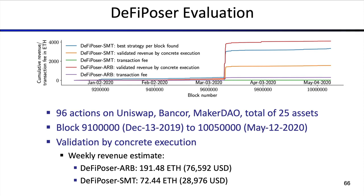When we evaluate DeFiPoser, we can objectively compare the Bellman-Ford variant and the SMT variant. On the x-axis is the block number representing blockchain time. We evaluated this from the beginning of 2020 until May 2020. The DeFiPoser ARP found the highest cumulative revenue in Ether. The DeFiPoser ARP transaction fee is a little higher than DeFiPoser SMT's, most likely because the ARP version found simply more potential sources.